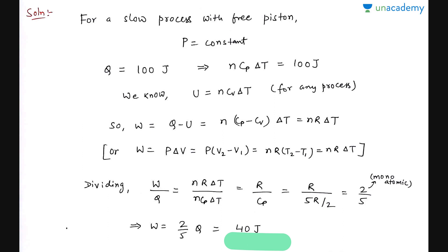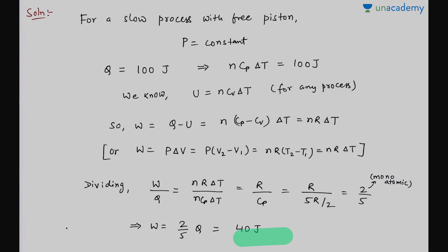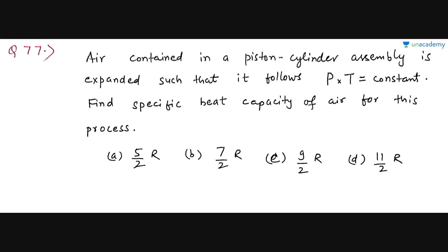The simple idea is: in an isobaric process, Q = nCpΔT, W = nRΔT, and ΔU = nCvΔT. Just take ratios and solve. Out of 100 J, 40 J goes to work and 60% goes to internal energy. Now let's solve the next question — this is about finding specific heat capacity for any kind of process.